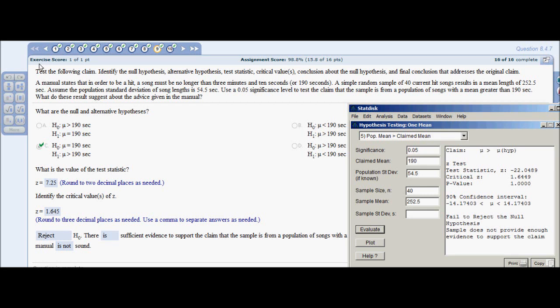So your claim will be your mean greater than 190 seconds, your null will equal 190 seconds. This one seems tricky but just pay close attention to what it's asking you to do and identify your input data. The population standard deviation is also given to you as 54.5, your sample size is 40.